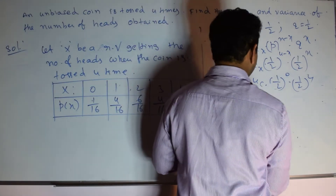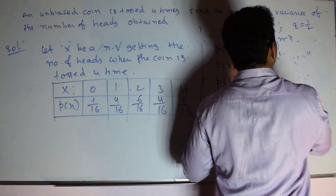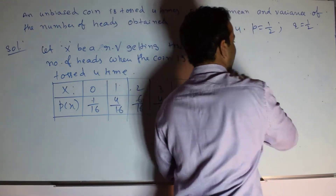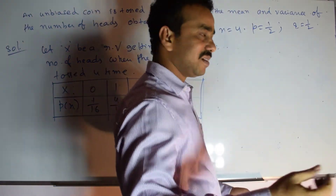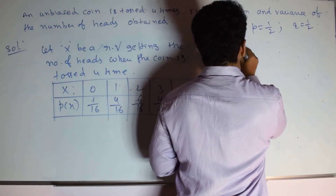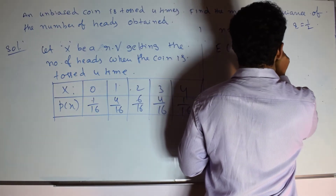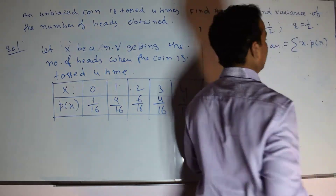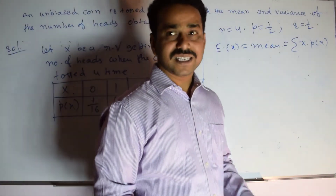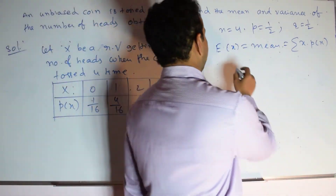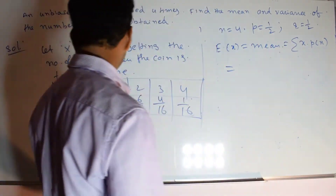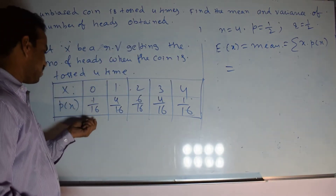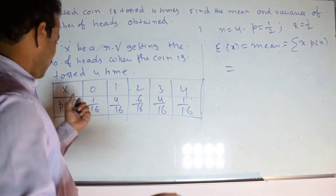Now we will calculate expected value and variance. What is the formula for expectation of x? Expectation of x means the mean. In probability there is a slight variation from statistics. Mean equals summation of x × P(x). Previously in statistics we used frequency; here we use P(x). Now substitute the values — multiply each random variable x by its corresponding probability and then add.